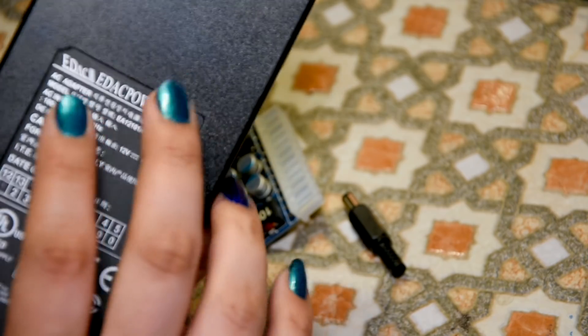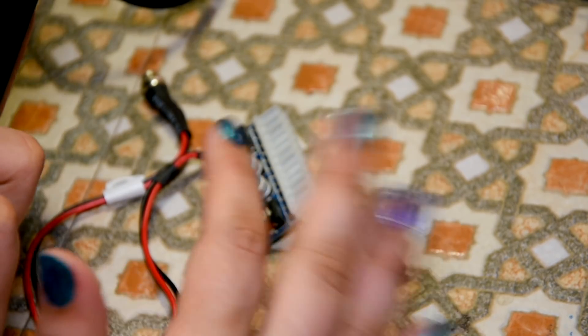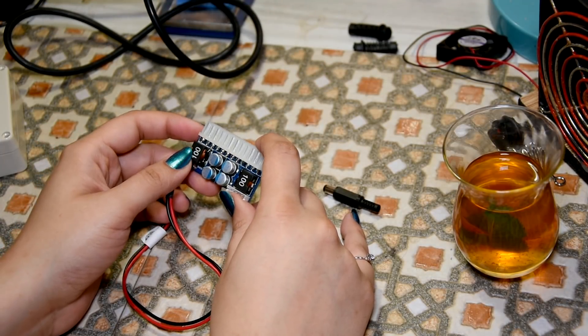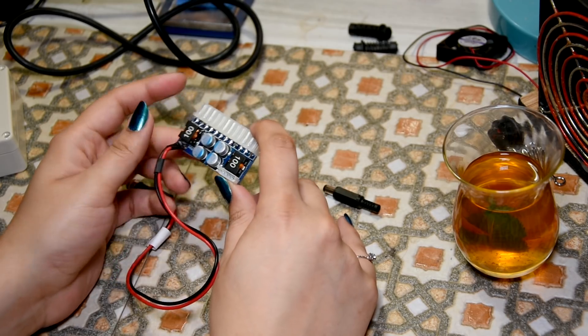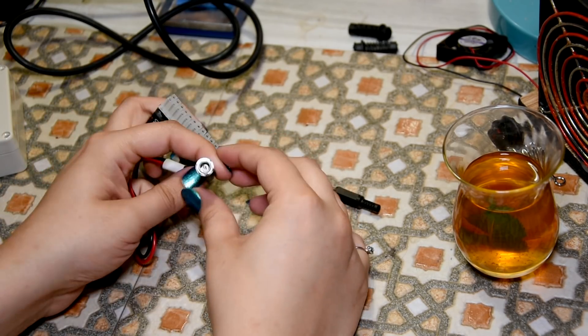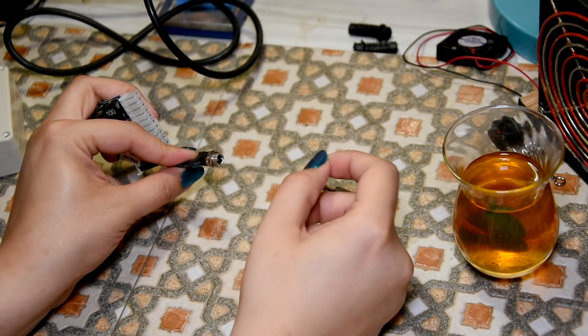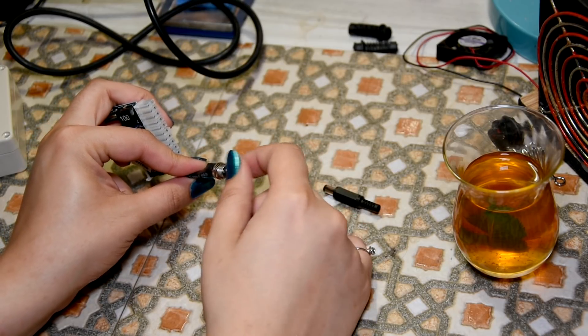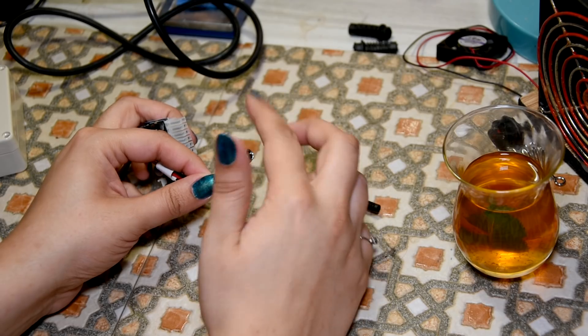I've seen people modding their Amigas and putting this inside the Amiga 1200, removing the power socket and putting this DC jack instead so they can connect their power brick straight into the Amiga and putting a power button on the Amiga itself.